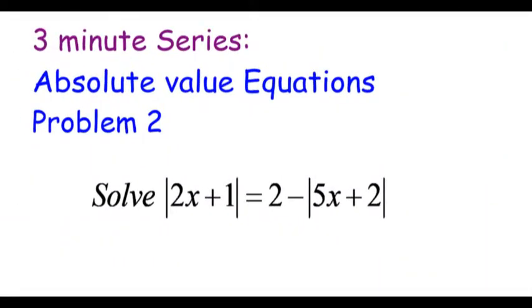Welcome to Math with Bob. We are looking at another in the three-minute series on absolute value equations. This is problem number two: solve |2x + 1| = 2 - |5x + 2|. It's actually a double absolute value equation.